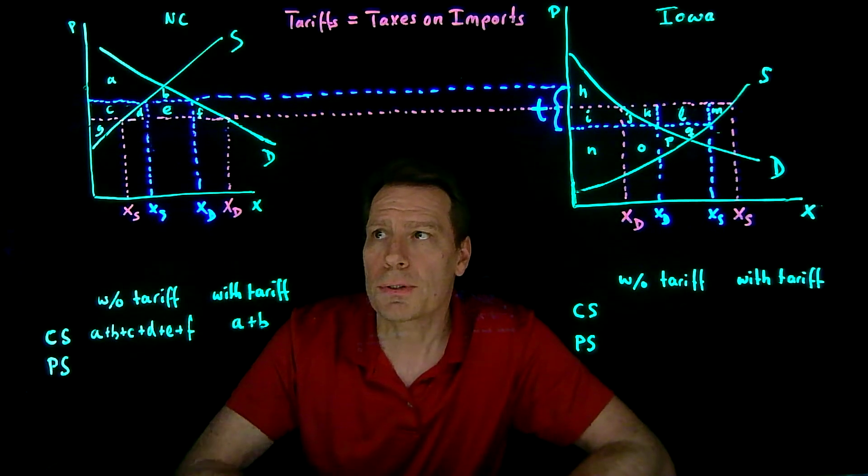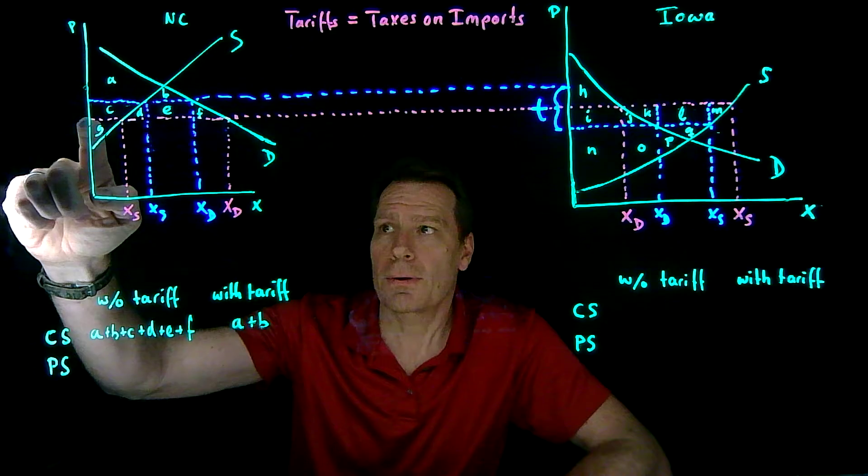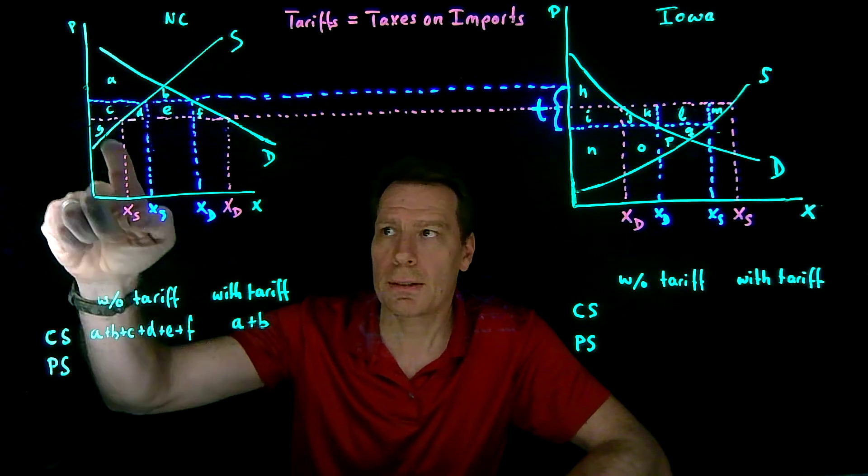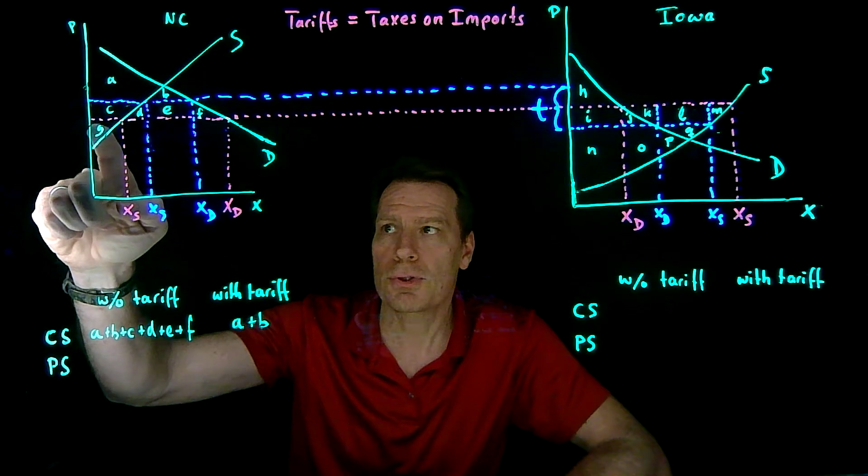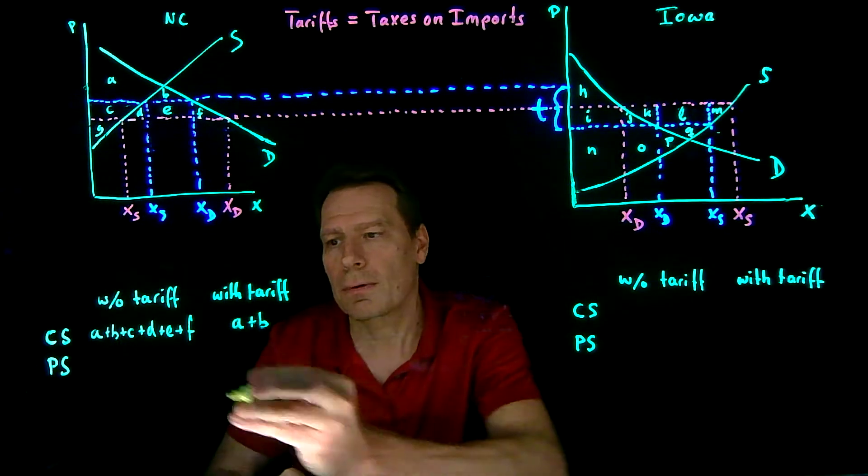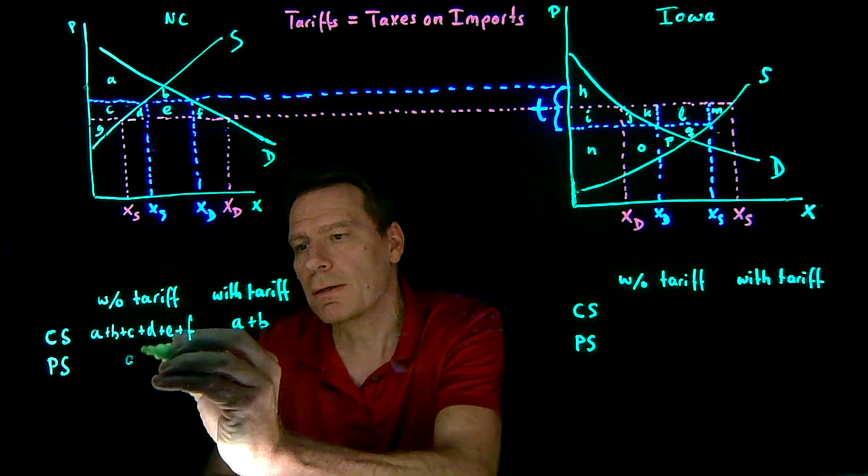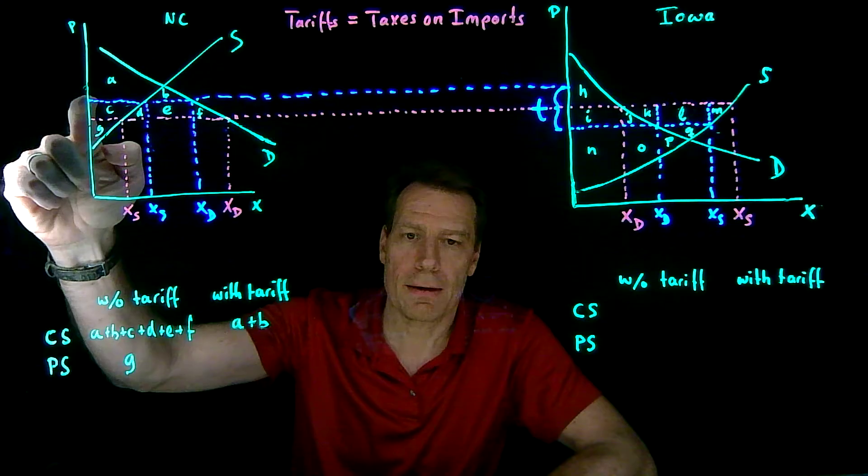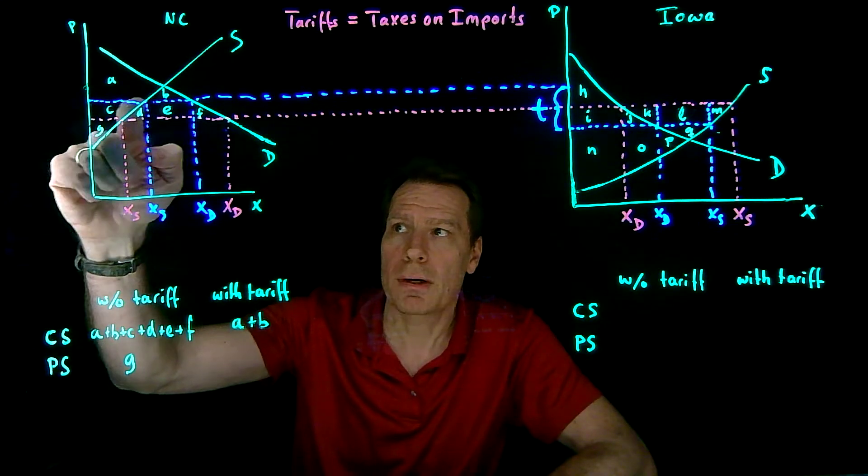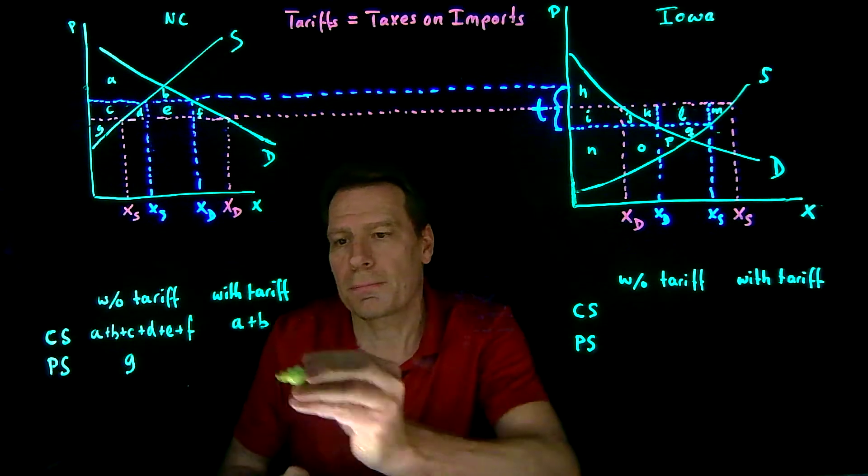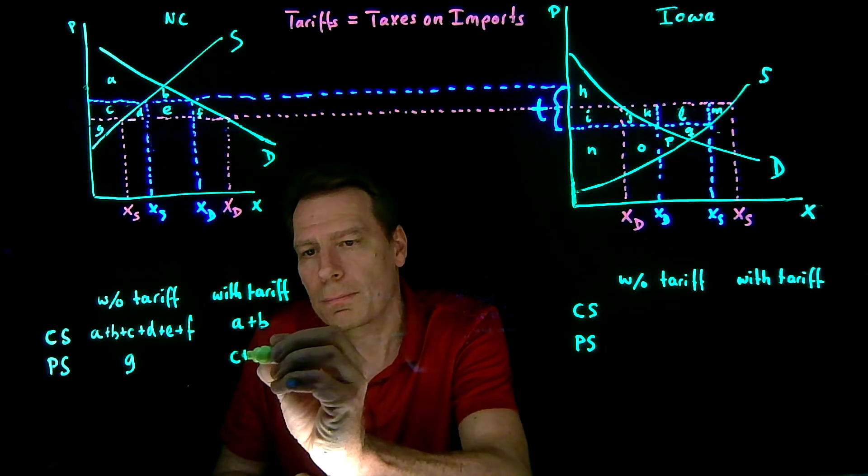What about producers? Well, originally they sold at the magenta price and they sold a low quantity, so they just had the surplus G below the magenta price down to the supply curve. So just G. Now they get a higher price after the tariff and they sell more, so they now get C plus G.